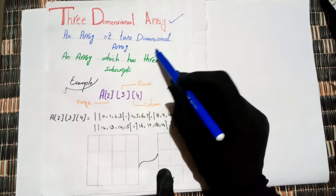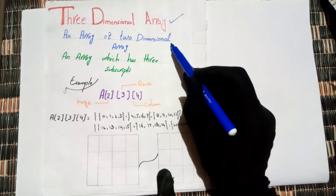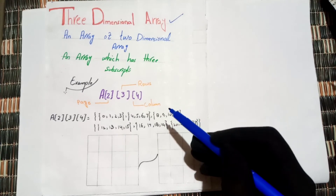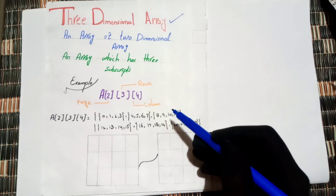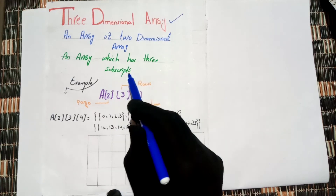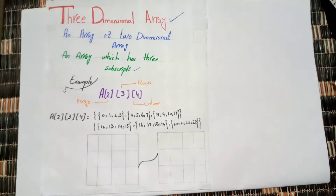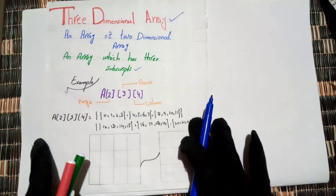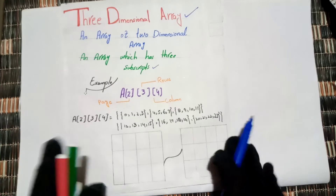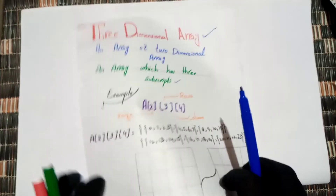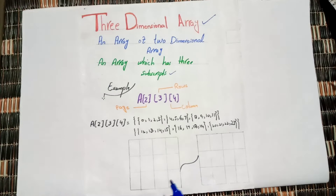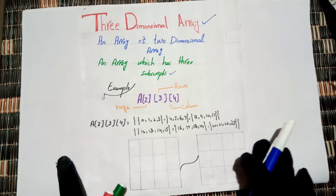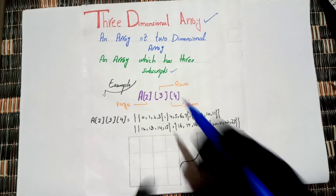A two dimensional array of arrays is called a three dimensional array. We can also say an array which has three subscripts is called a three dimensional array. In the previous lecture on two dimensional arrays, we had two subscripts — the number of rows and the number of columns.